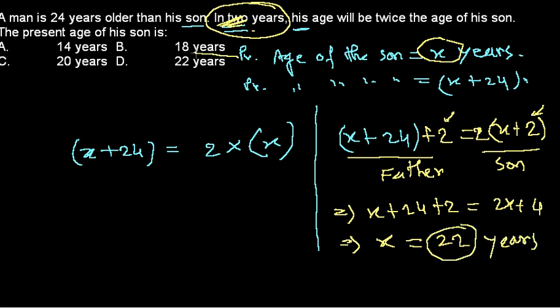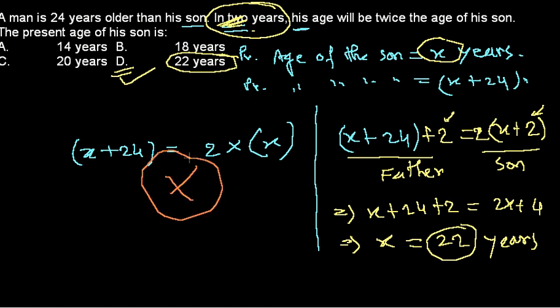So option D is the correct answer. The present age of the son is 22 years. This is the mistake most students make — using present ages without adding 2 years. The wrong approach gives an incorrect answer; the right approach is to always account for the time difference. I hope that's helpful!